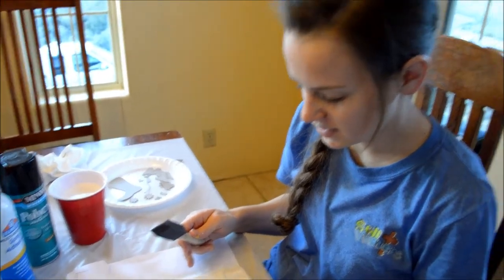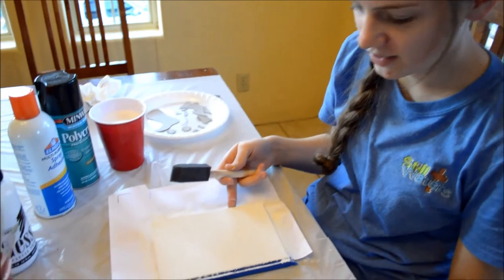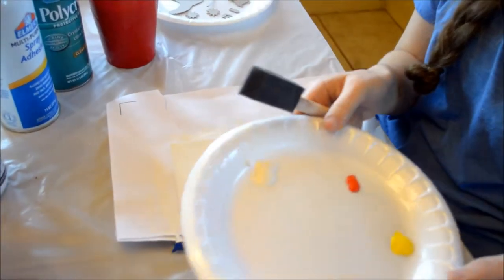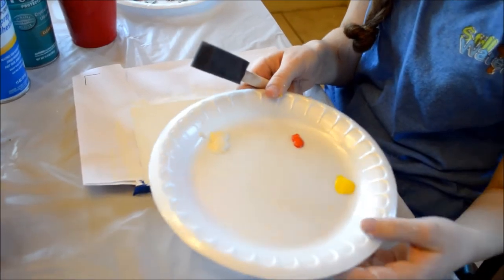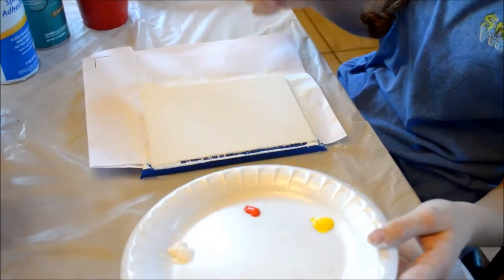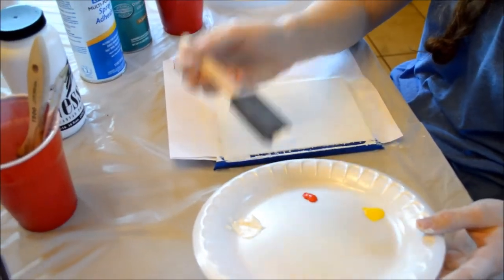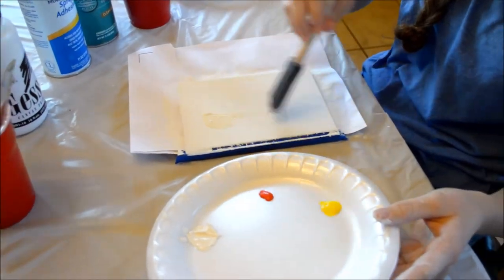Now that you've done enough layers of gesso that you can no longer see the color, you're ready to move on to the next step. I've got three paints here: cream, orange, and yellow. And I'm just using acrylic paint. So you're gonna paint your whole cover using cream.